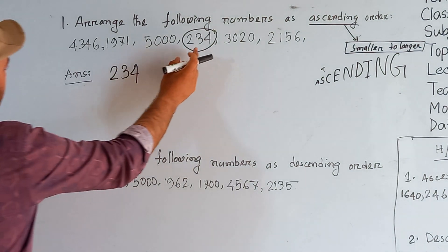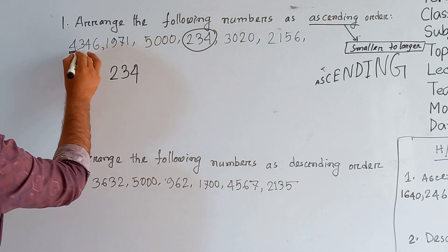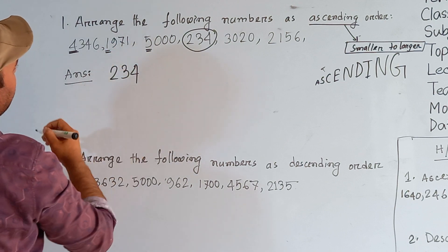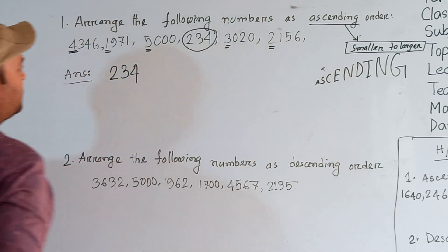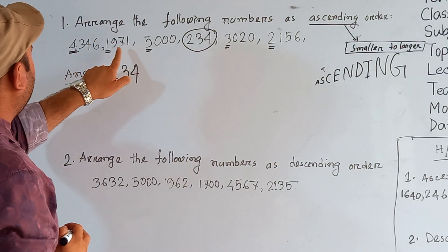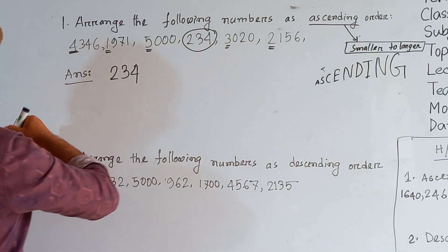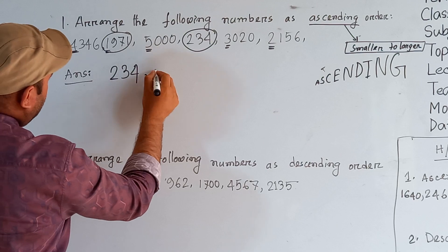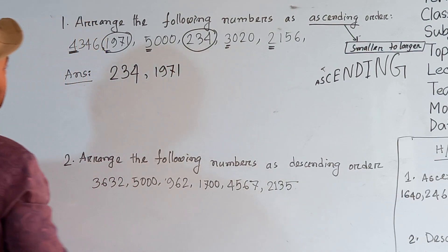Now look at the four-digit numbers. We have 4000, 1000, 5000, 3000, and 2000 in the thousands place. Among 4, 1, 5, 3, and 2, the number 1 is the smallest, so 1971 is the next number in ascending order.